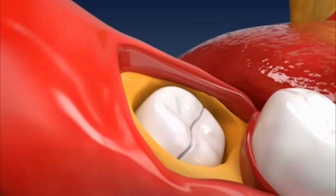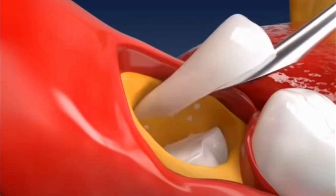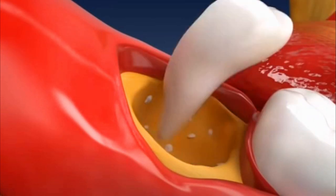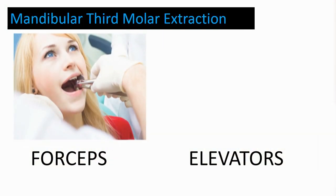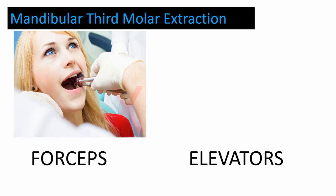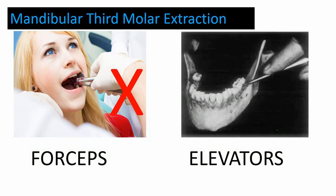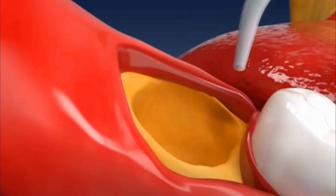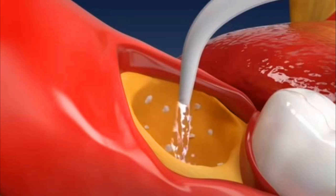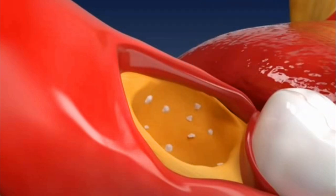Tooth sectioning is then done — the wisdom tooth is sometimes split into half with the bur to enable easier retrieval with an instrument called an elevator. No forcep delivery is done because it might damage the inferior alveolar nerve. A drill hole can be made to get a point of application for easier retrieval with the elevator.